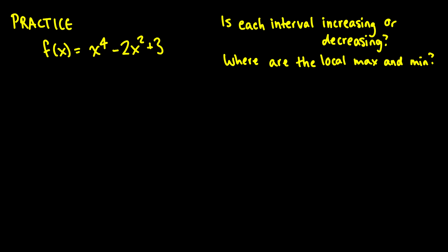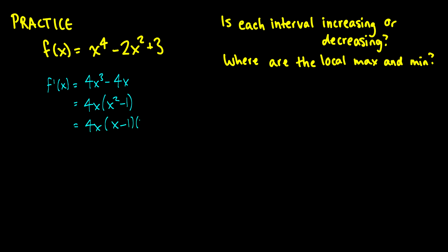Now let's do a practice problem. Take the function f(x) = x⁴ - 2x² + 3, and determine on each interval whether it is increasing or decreasing, and whether the critical points are local maximums or minimums. Taking the derivative: f'(x) = 4x³ - 4x. Factoring out 4x gives 4x(x² - 1), which equals 4x(x - 1)(x + 1).